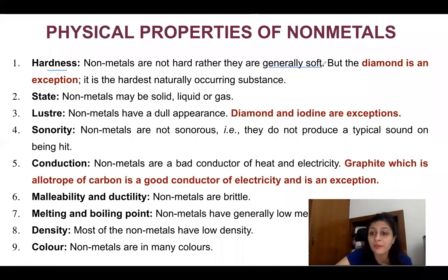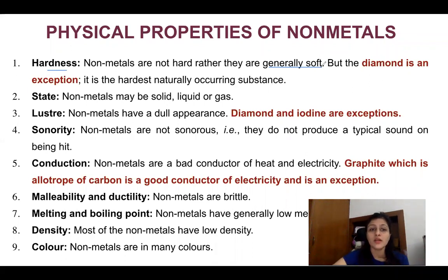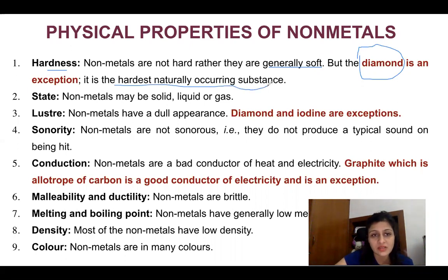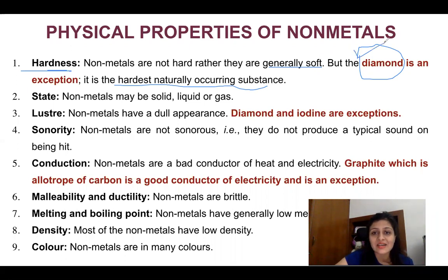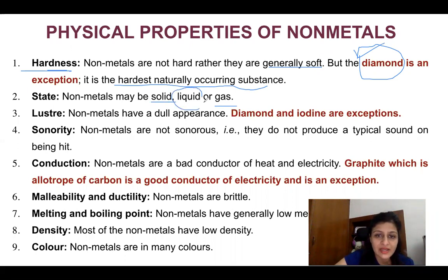Regarding hardness, non-metals are generally soft, but there is an exception — diamond. Diamond is a form of carbon only, but it is the hardest naturally occurring substance. All other non-metals are generally soft. Their state is solid or gaseous, with the exception of liquid bromine. They have a dull appearance, but diamond and iodine are exceptions — diamond, as you know, is very shiny.